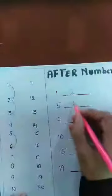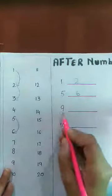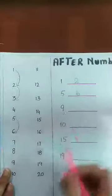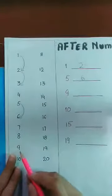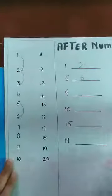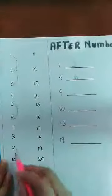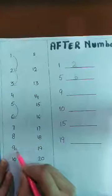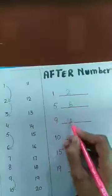We will see six. Now this is number nine. Where is number nine? This is number nine. What comes after nine? Nine, what comes after nine? Ten. Here we will see — ten.